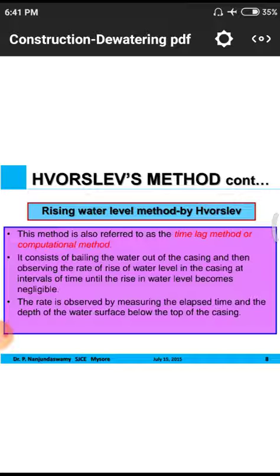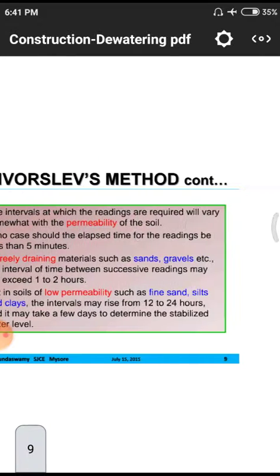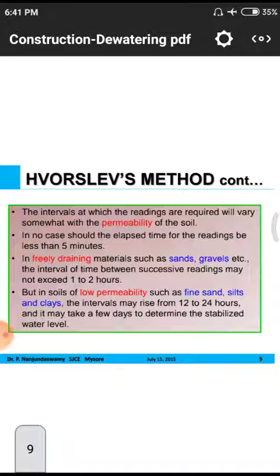The rate of observation involves measuring the elapsed time and depth of water surface below the top of the casing. After drilling the hole, we monitor water flow over a period of time. The interval between readings varies with the permeability of the soil, which we assess from geotechnical lab tests — permeability tests tell us how much water is permeable to a particular soil.